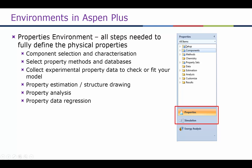We collect all the experimental property data to check and fit our model — we will do a tutorial on that. We also look at property estimation and structure drawing in case we have a user-defined component. Not all components are available, so if it's a very complex molecule like an amino acid, for example, it may not be available in Aspen Plus, so we need to define it and draw the structure of that molecule.